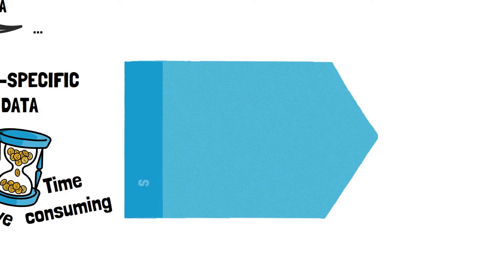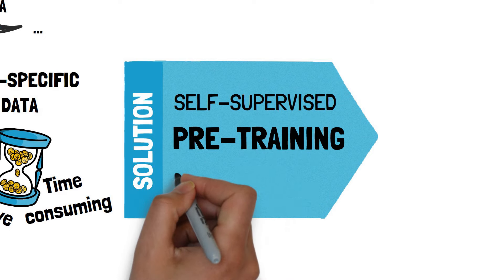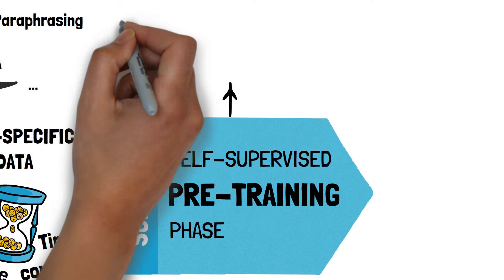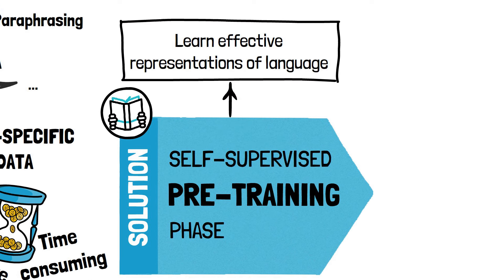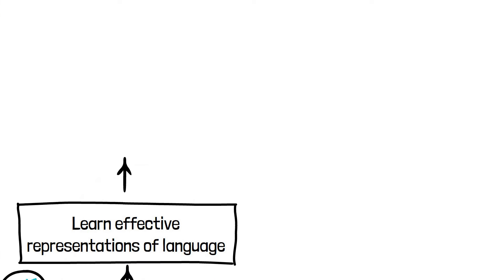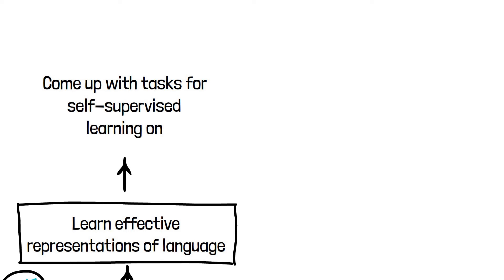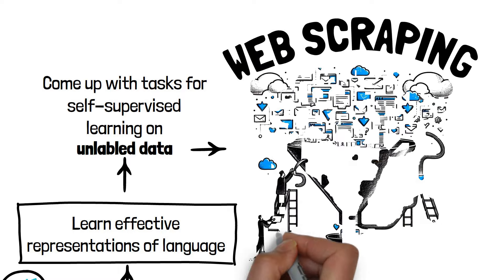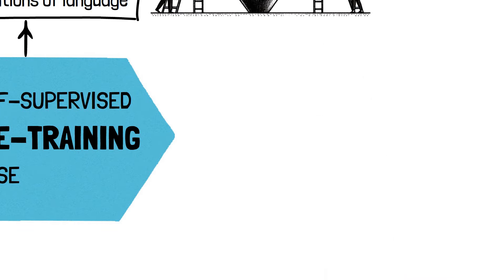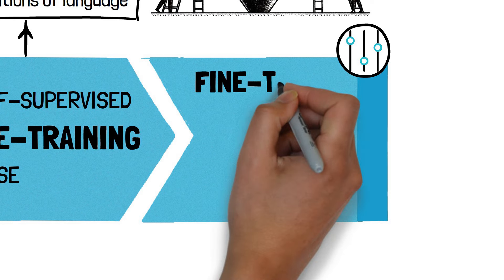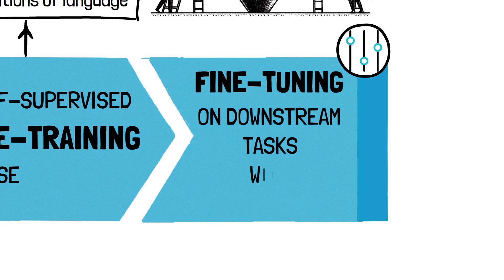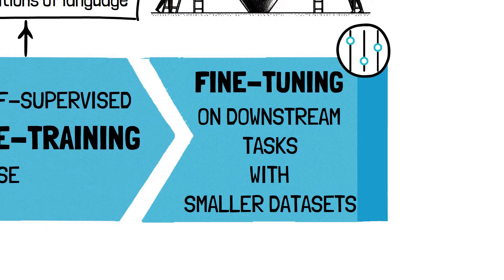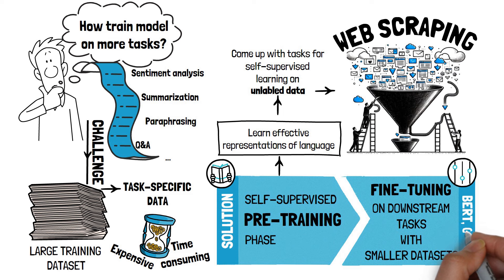The solution is to first add a self-supervised pre-training phase. In pre-training, the model can learn effective representations of language basically on its own. For this we need to come up with one or more pre-training tasks that lend themselves well to self-supervised learning — that is, learning from large amounts of unlabeled text. Large amounts of unlabeled text are relatively easy to obtain, for example by scraping the internet. After the model has been pre-trained, we can then fine-tune it on a specific downstream task using a much smaller task-specific dataset. This is exactly how language models like BERT and GPT work.